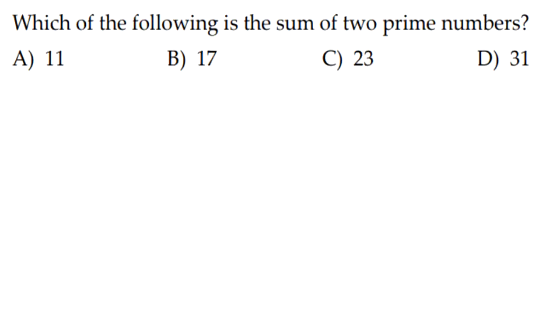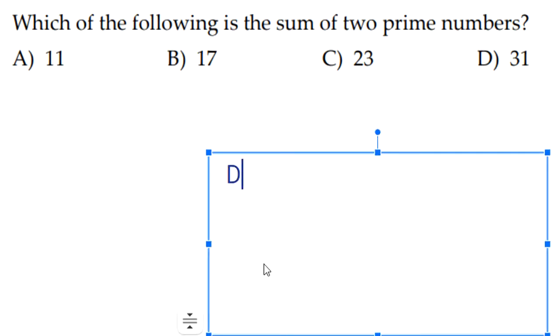Second question: which of the following is the sum of two prime numbers? So let's just try out the smallest prime number that we know, which is 2. So 11 minus 2 is 9, 9 isn't prime. 17 minus 2 is 15, 15 isn't prime. 23 minus 2 is 21, 21 isn't prime. But 31 minus 2 is 29, 29 is prime. So our answer would be D, 31.